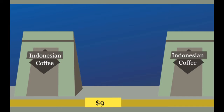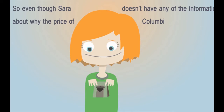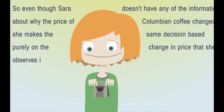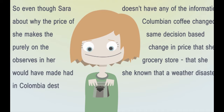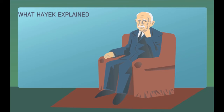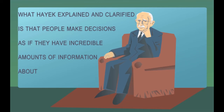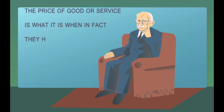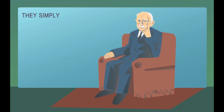Even though Sarah doesn't have any information about why the price of Colombian coffee changed, she makes the same decision based purely on the change in price that she observes in her grocery store that she would have made had she known that a weather disaster in Colombia destroyed much of that country's coffee crop. What Hayek explained and clarified is that people make decisions as if they have incredible amounts of information about why the price of a good or service is what it is, when in fact they have little or no information about why the price is what it is. They simply know what the price is, and that is sufficient to prompt each of us to act as if we know vast quantities of facts about economic reality that we can't.